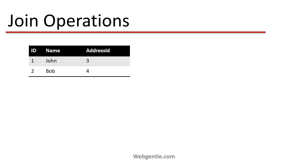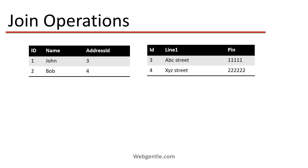Let's see a visual example. Suppose I have an employee table on the left side with two records containing ID, name, and address ID. The address ID is the ID referencing another table — the address table on the right side, which contains the details of the address. For example, for ID 1 which is John, the address is ABC Street, and for ID 2 the address is also ABC Street.